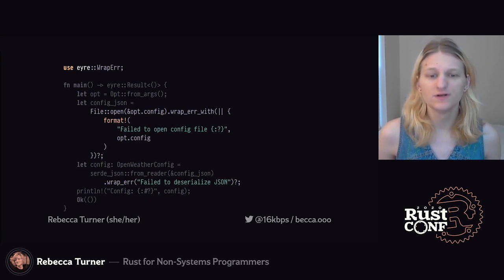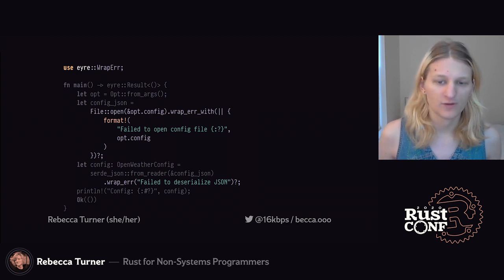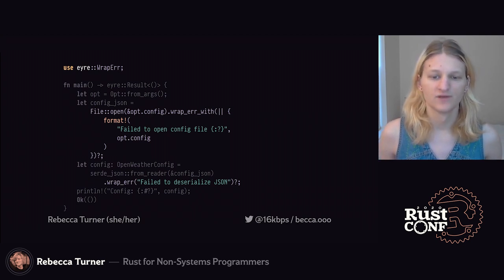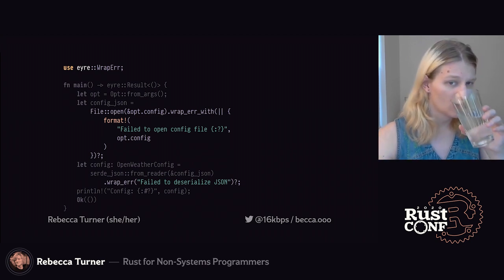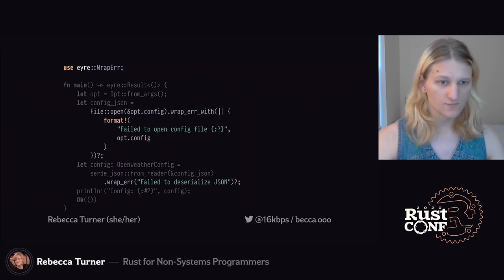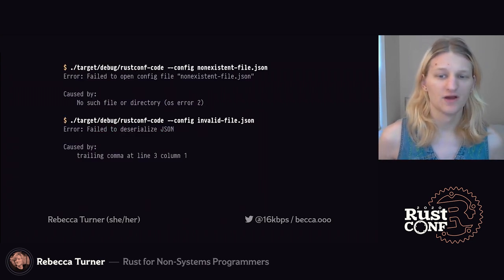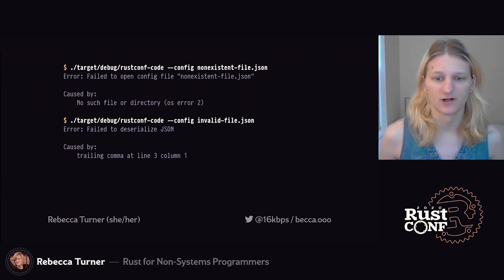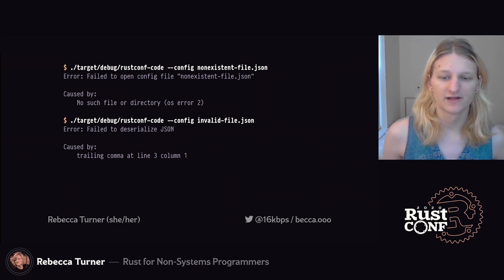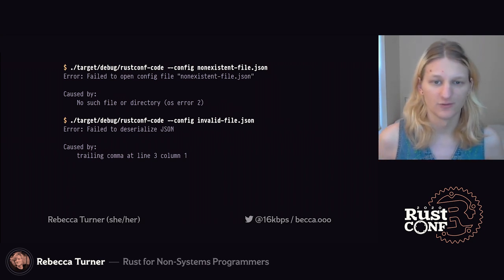Using the question mark operator, we're going to use the wrap_err methods from eyre's WrapErr trait to more accurately describe what went wrong. We just write a bit about what we were doing that might have caused an error, and then that string will get displayed if the error report is printed. It's a pretty simple step, provided you do it from the start, and it makes debugging a lot easier. Here, we can try to use a non-existent file or an invalid one as our config, and we can see the error messages we get. These are especially useful when we have a bunch of layers of error context — and unlike exceptions in a lot of languages, we don't just get an enormous unreadable stack trace by default.